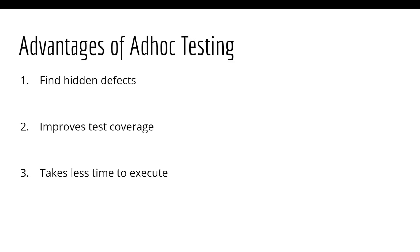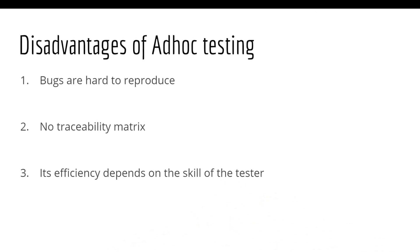Just like the advantages of ad-hoc testing, there are a few disadvantages as well. Since it is ad-hoc and doesn't follow any structure, the bugs, even if found, are very hard to reproduce. We cannot trace the requirements or check the test coverage as there is no traceability matrix or any documentation. The efficiency of testing is dependent on the skill of the tester as well as the prior knowledge of the system, because ad-hoc testing requires a lot of error guessing which requires skills and prior knowledge.